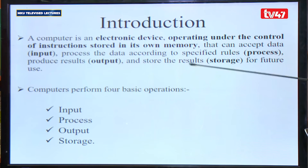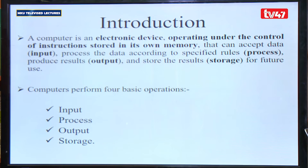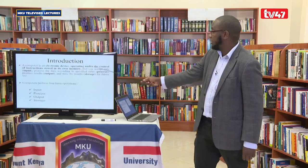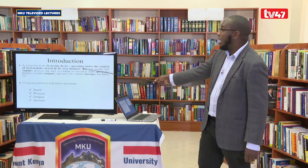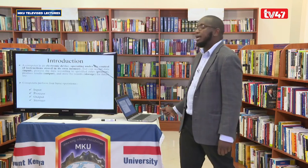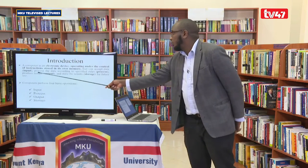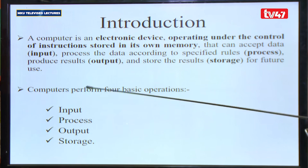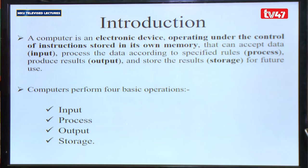Remember, in storage we store information, but once you store information and process more, it becomes knowledge. So we have the terms data, information, and knowledge. Anything that qualifies to be a computer has to be an electronic device, operating under the control of instructions — which is software — and should have its own memory that can accept data, process data through the CPU or processor, and produce information in the form of output and store it as knowledge.